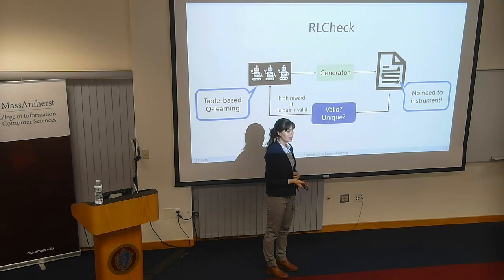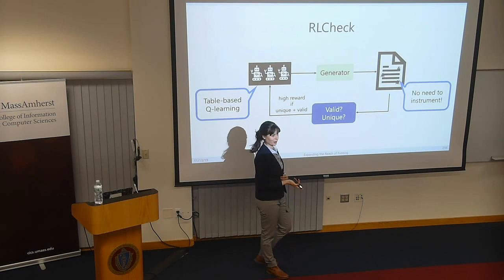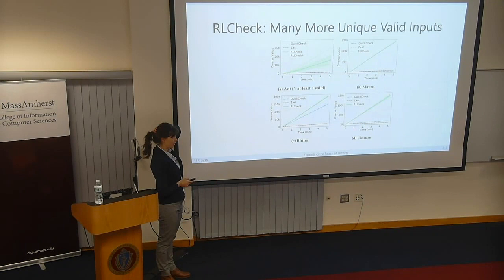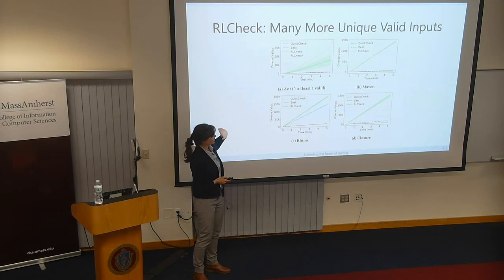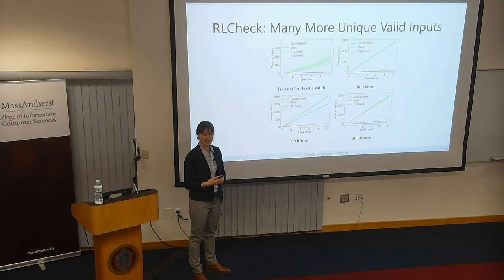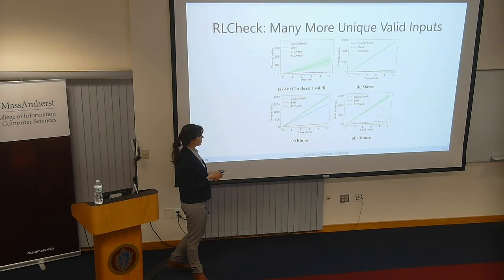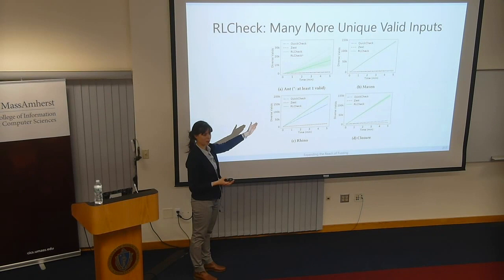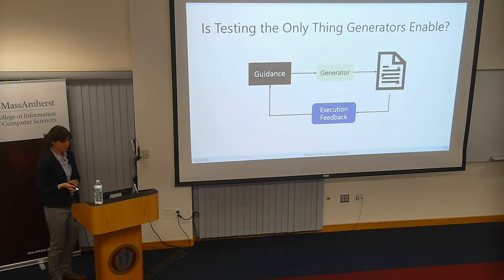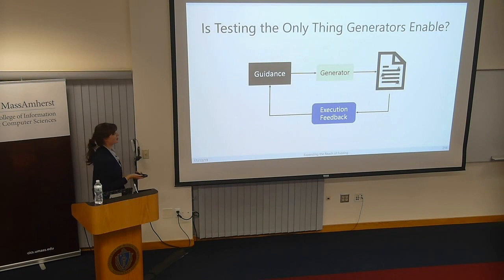When we compared RLcheck to Zest on four of the five benchmarks from the Zest work, we found that in general the RL technique was able to find a lot more unique valid inputs than Zest in small timeframes, because this learning was just so much faster. There's a lot more work to be done — this is like step one — but it's really promising, showing there are other things you can do beyond coverage guidance.